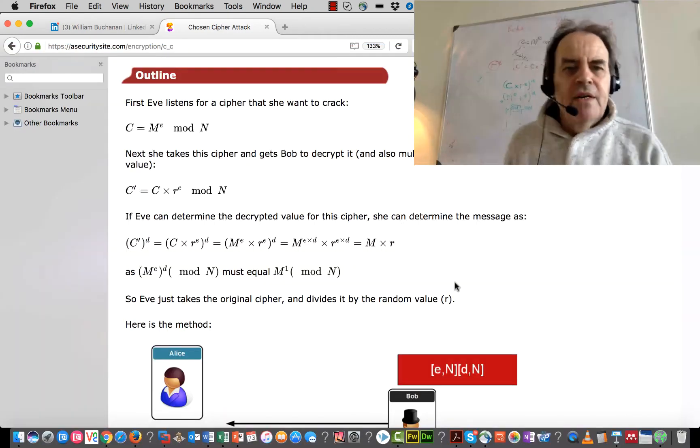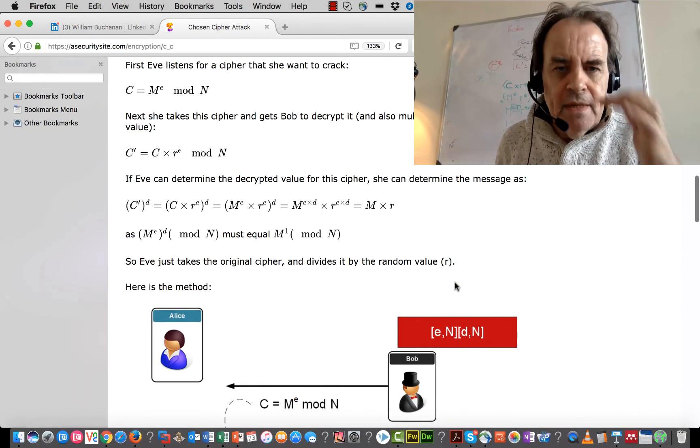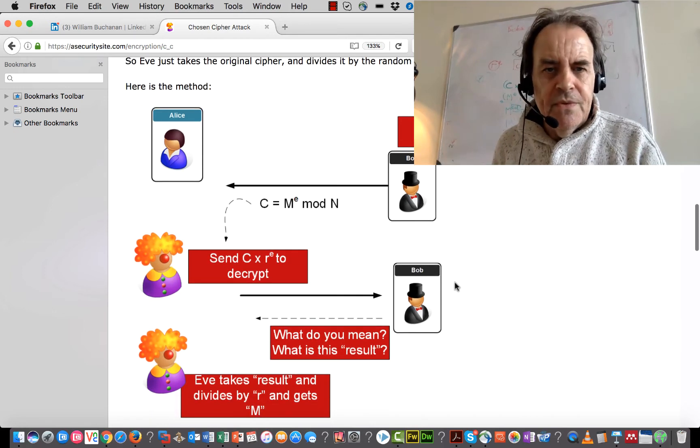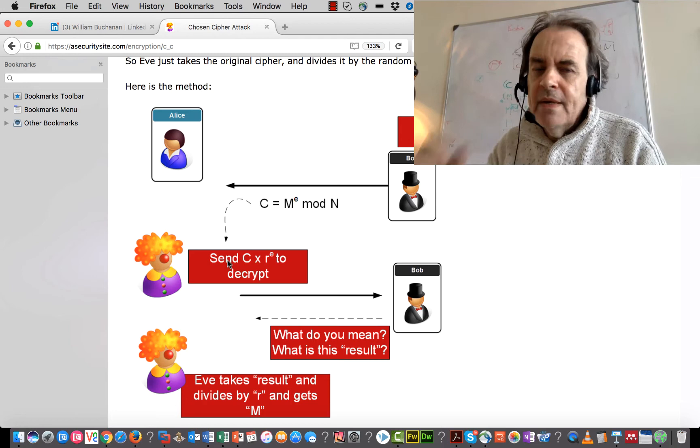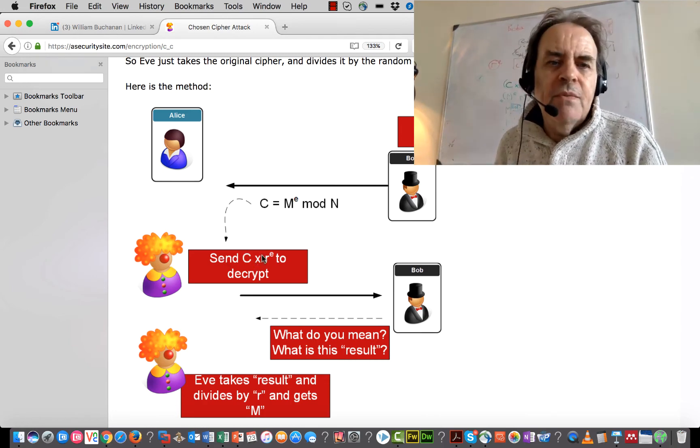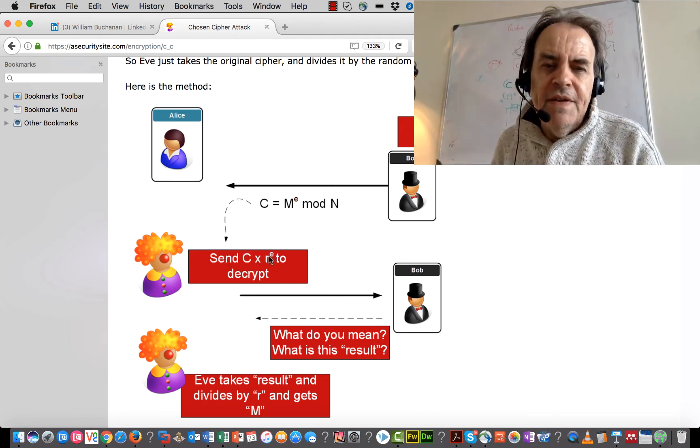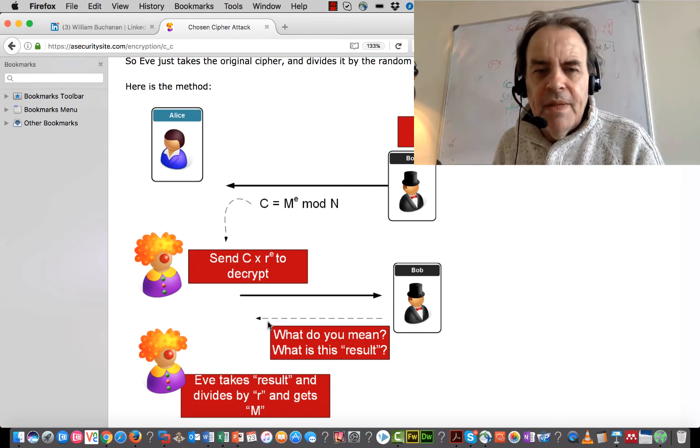So let's have a look. This is an example. Here's the basics behind it. So there's the cipher going out. Alice multiplies it by R to the power of E. Bob replies back.